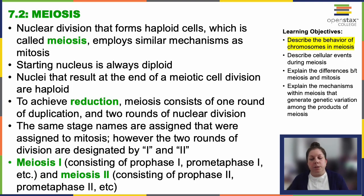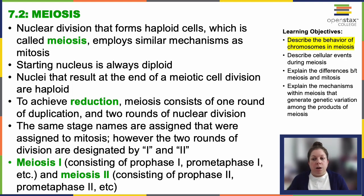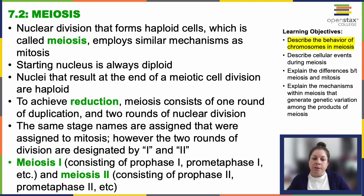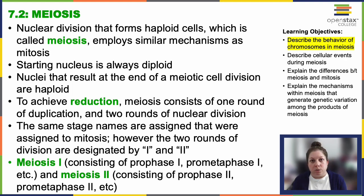Meiosis closely resembles mitosis. It generates haploid cells through nuclear division, just like mitosis, but unlike mitosis — which produces genetically identical daughter cells — meiosis involves one round of chromosome duplication and two rounds of nuclear division. This reduces the chromosome sets from two to one in the four final daughter cells. So while meiosis utilizes some similar mechanisms to mitosis, the final product is not the same. Mitosis gives us two identical daughter cells; meiosis, requiring two rounds of division, leads to four non-identical, unique daughter cells.